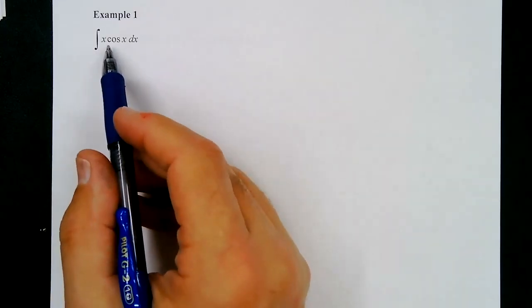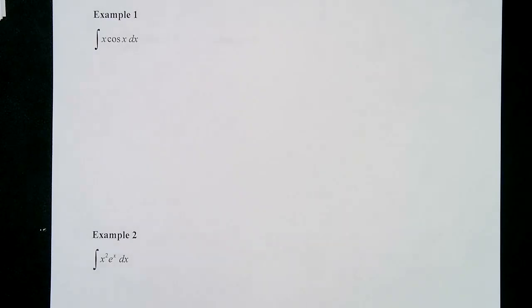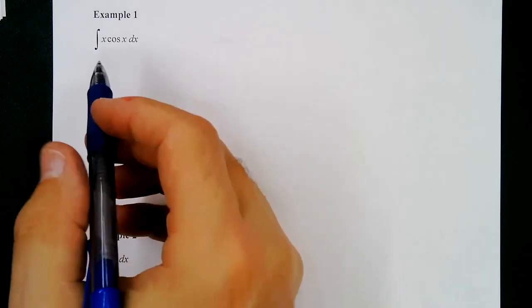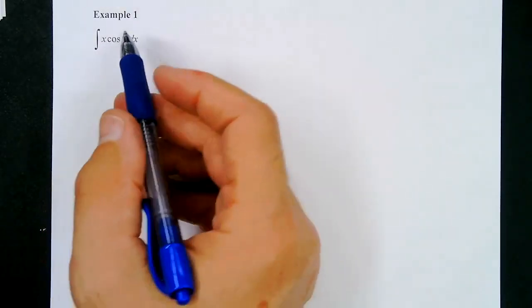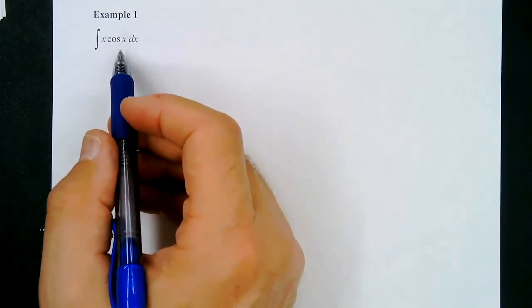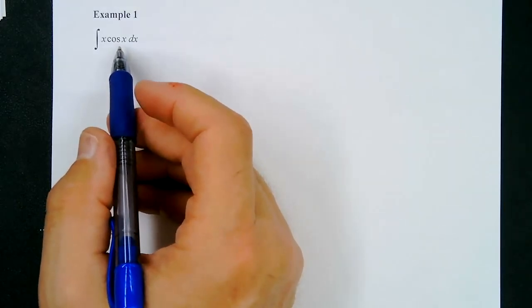First problem: the integral of x times cosine(x) dx. We can't use integration by substitution because we don't have a u and a du set up from the chain rule. So we use integration by parts. Going through LIPIT: no logarithms, no inverse trig functions, but we do have a polynomial — x — so that's our u.